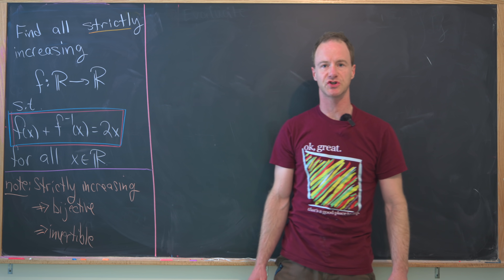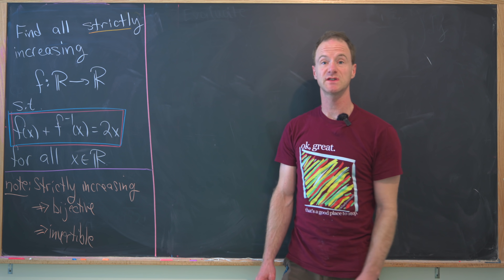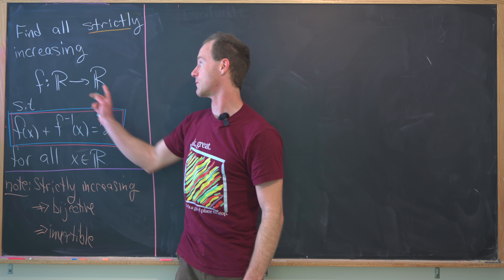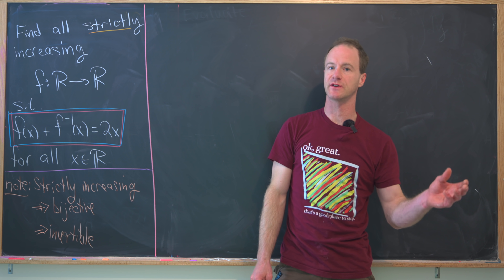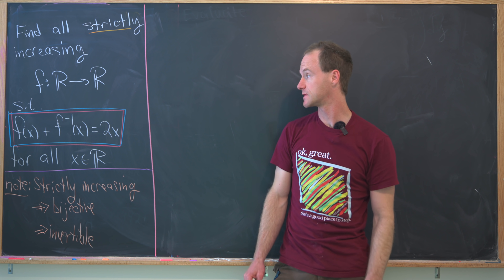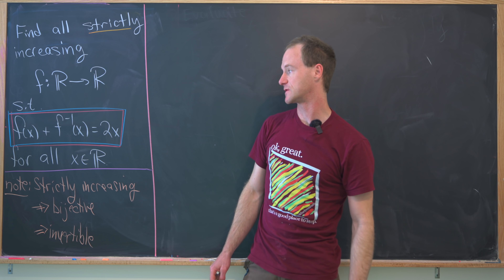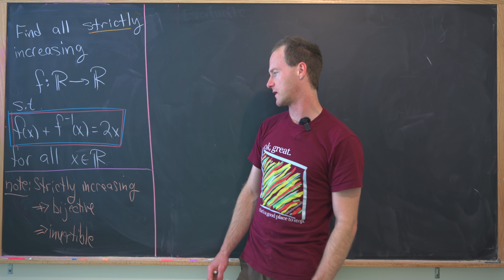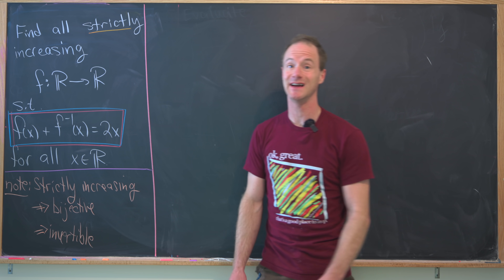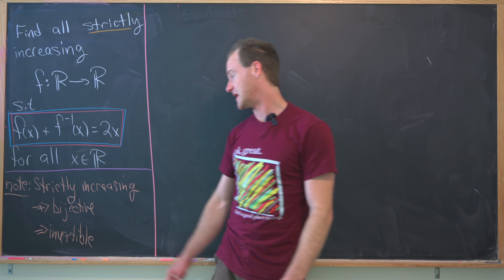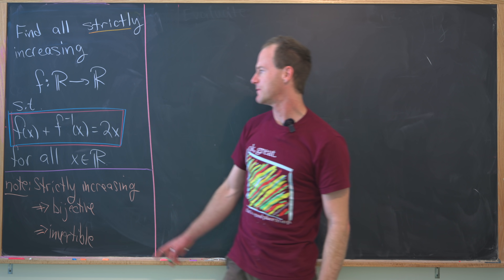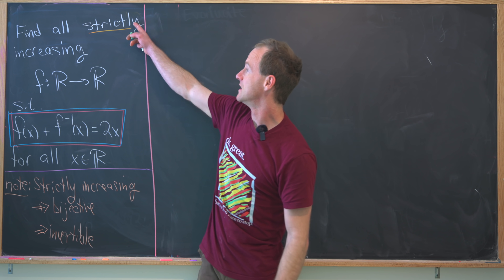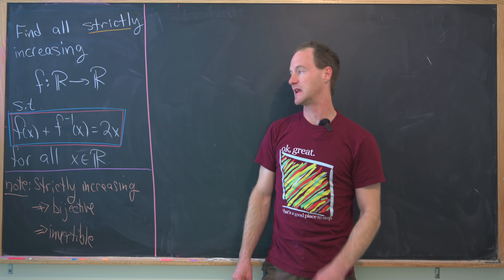I've got a pretty interesting functional equation problem to show you guys today. We want to find all strictly increasing functions f from ℝ to ℝ such that f(x) plus f inverse of x is equal to 2x for all real numbers x. Strictly increasing implies bijectivity, and bijectivity implies invertibility, so the inverse function indeed exists.